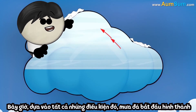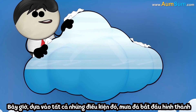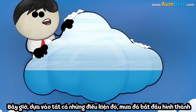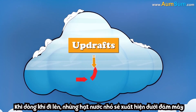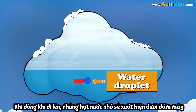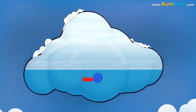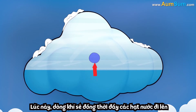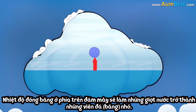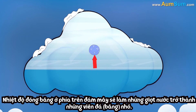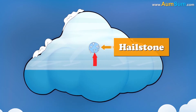Now, according to a recent study, hail begins to form when updrafts lift upwards the water droplets present at the bottom of the cloud. As they ascend, the freezing temperatures cause the droplets to turn into tiny hailstones.